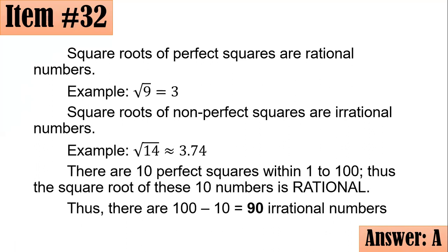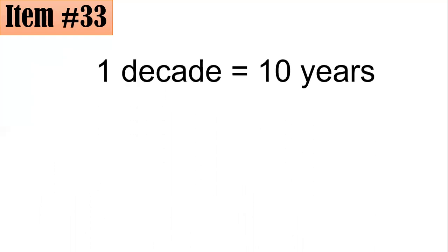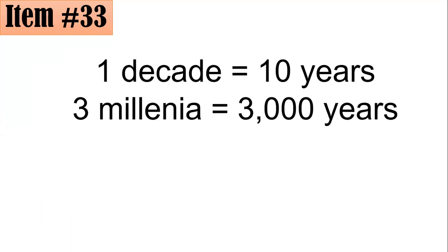Item 33. How many decades are there in three millennia? Is it 30, 300, 3000, or 30,000? We have to be reminded of the following: one decade is 10 years, and three millennia—a millennium is 1000 years, so three millennia is the plural of millennium—three millennia is 3000 years.